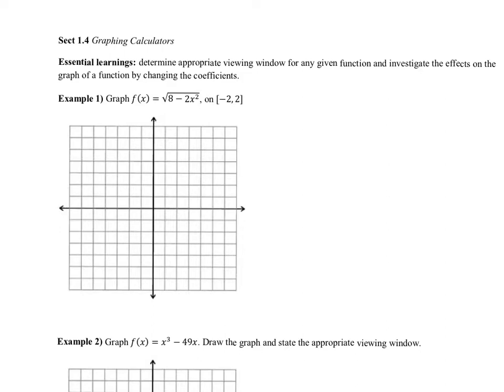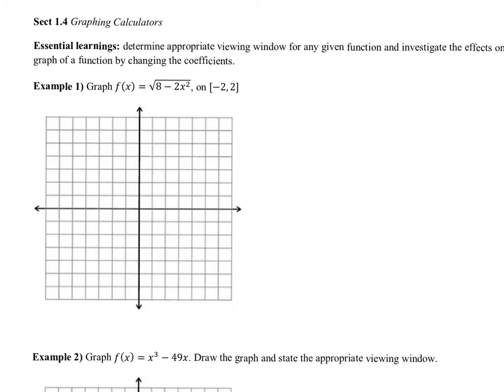For this first example, we have this equation f(x) = √(8 - 2x²) and we're looking at the window from negative 2 to 2. Right away, we know that for x, the window that makes sense is negative 2 to 2. Now the question is, where is the graph going to maybe be located on that window?